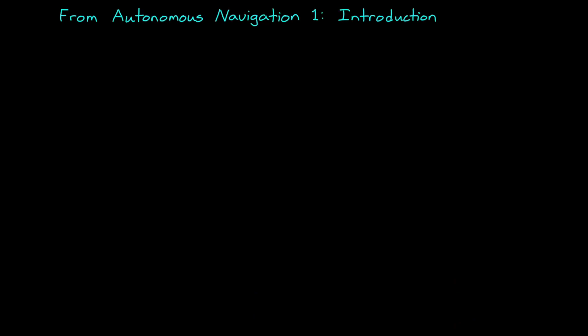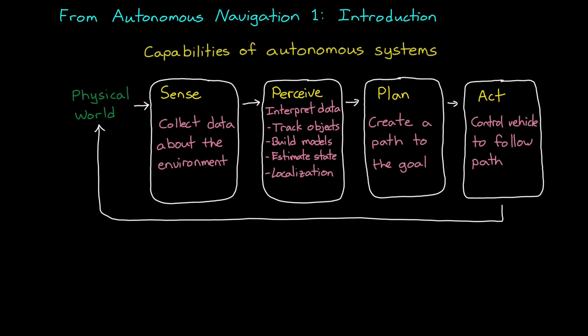Earlier in this series we talked about the capabilities necessary for an autonomous navigation system. We have to sense the environment, and then use those measurements to build a map, localize within the map, and model and track the local dynamic objects. Then we have to plan a path to the goal and finally act on that plan.